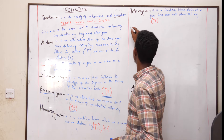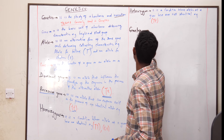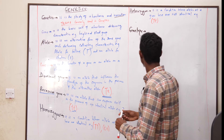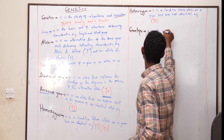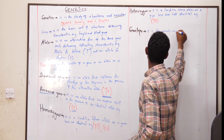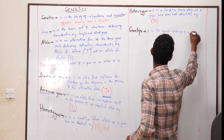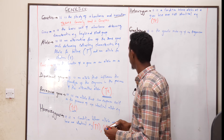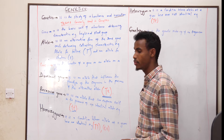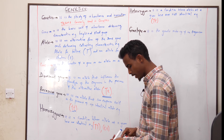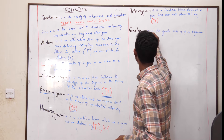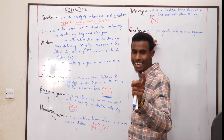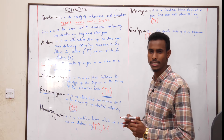We also have genotype as another terminology. Genotype is the genetic makeup of an organism. For instance, the genotype can be TT. These are two alleles — this is one allele and this is another allele. The two alleles collectively form the genotype of the organism.